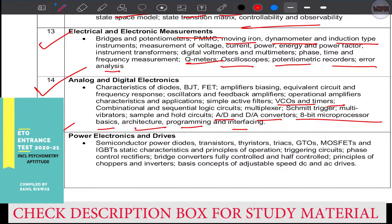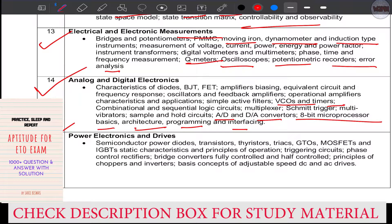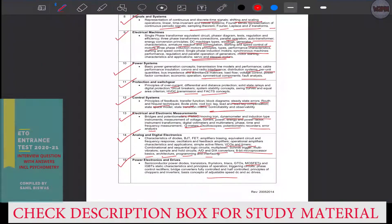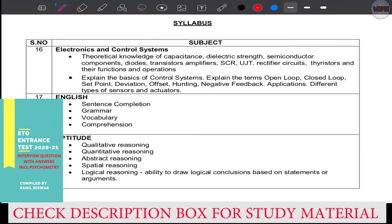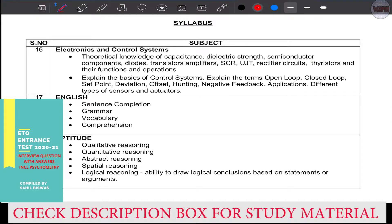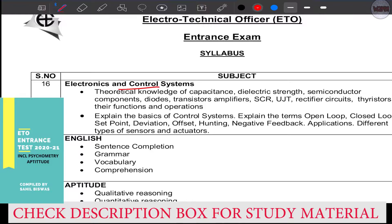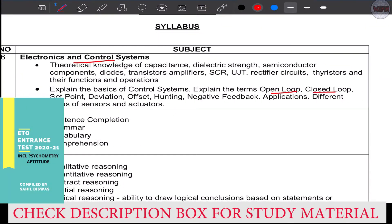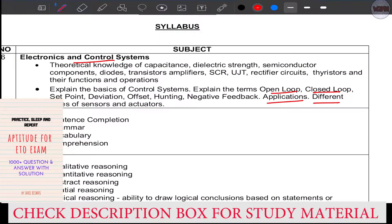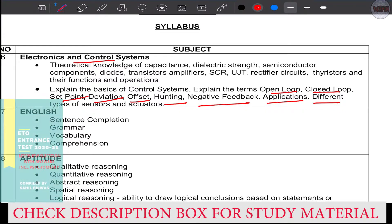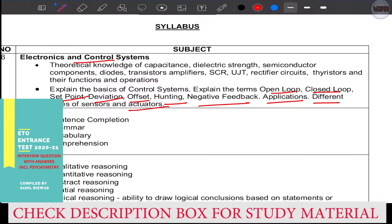Fifteen: power electronics drives - semiconductor, transistor, MOSFET, these things are there. Finally, electronic and control systems: open loop, closed loop application, negative feedback, hunting, offset, deviation, set point, actuator.